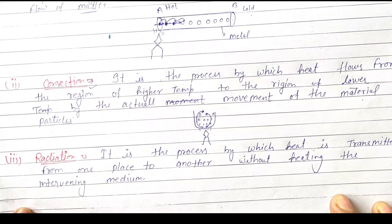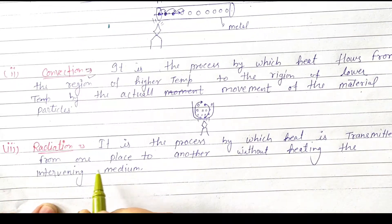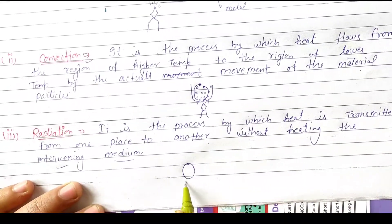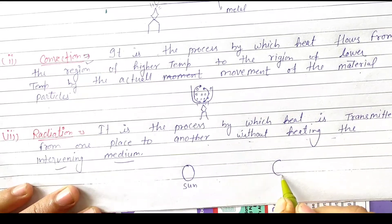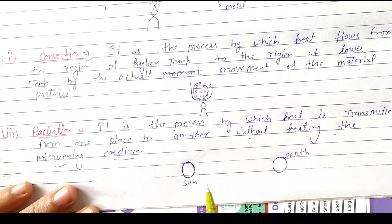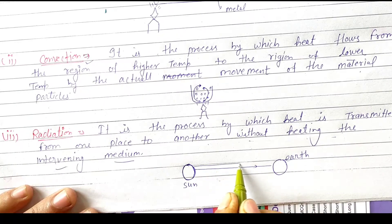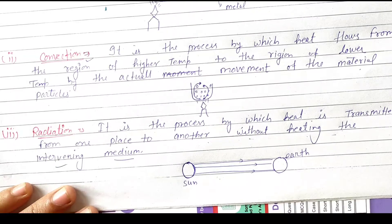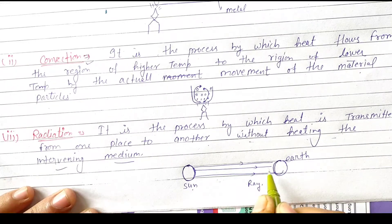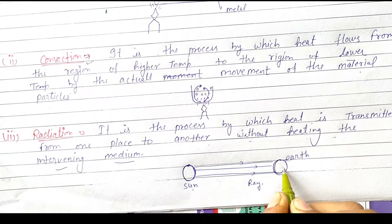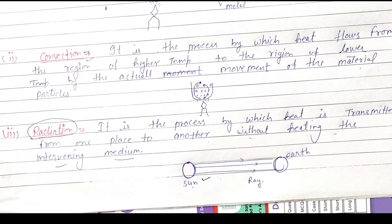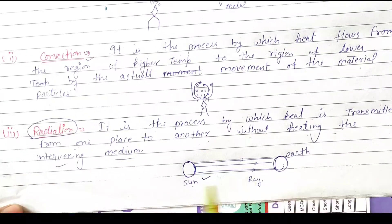Next method is radiation. Radiation is a process by which heat is transmitted from one place to another without heating the intervening medium. Let us suppose this is the sun — it is a source of energy — and this is the earth. The sun radiates energy without any medium. The energy rays are incident on earth and energy is transferred here. This energy transfer without any medium — that is radiation.